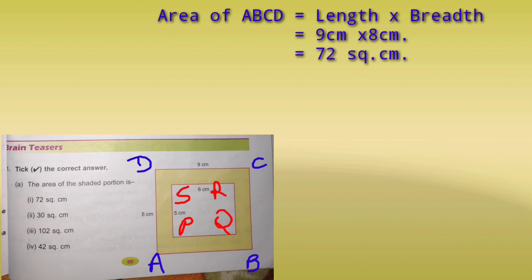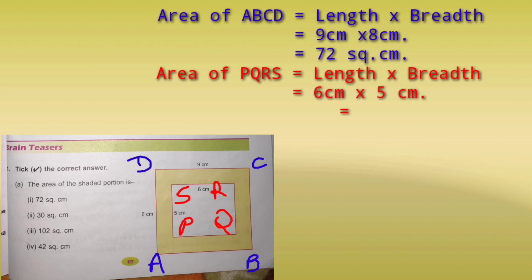Now for rectangle PQRS, we remove the outer rectangle and look only inside. The area of PQRS is length multiplied by breadth: 6 multiplied by 5, which equals 30 cm². The shaded portion is only the yellow part, so the shaded area equals 72 minus 30, which is 42 cm².